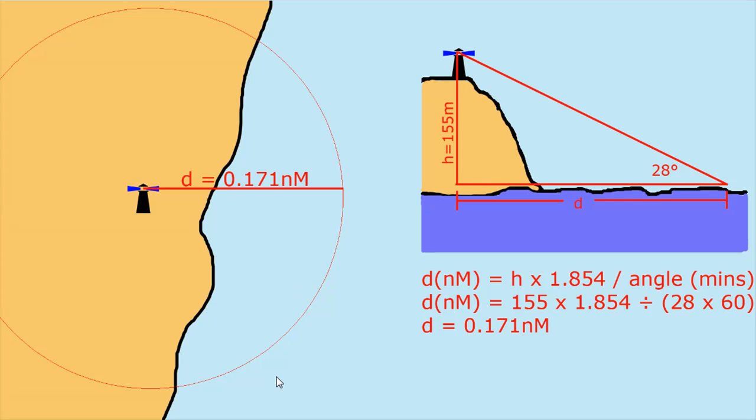So that is 155 multiplied by 1.854 and then all of that is divided by 28 degrees times 60 minutes in a degree. So 60 minutes in a degree times 28 gives you that number there. So you throw all that into your calculator and you get an answer of approximately 0.171 nautical miles.